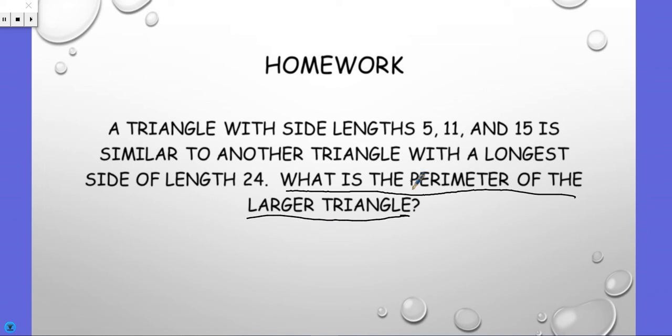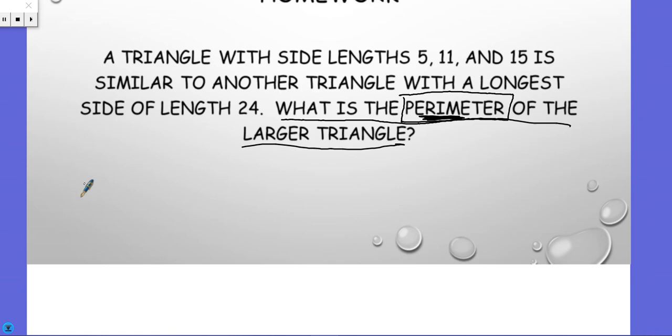So it's asking me for the perimeter of the bigger triangle. Here you need to know the word perimeter means to add up all the sides. The word 'rim' in there means the outside, that's how you can remember it.